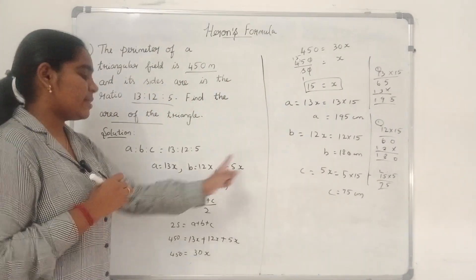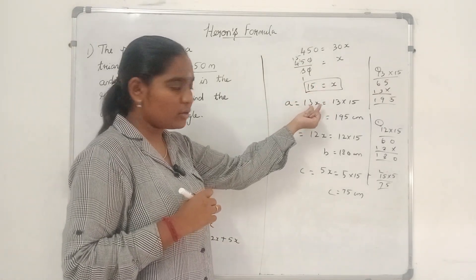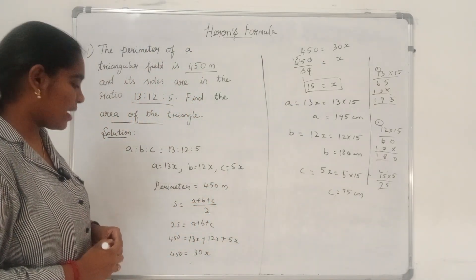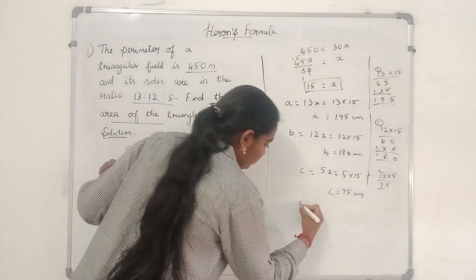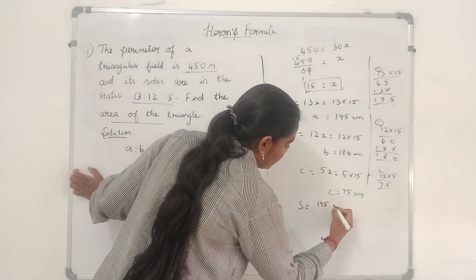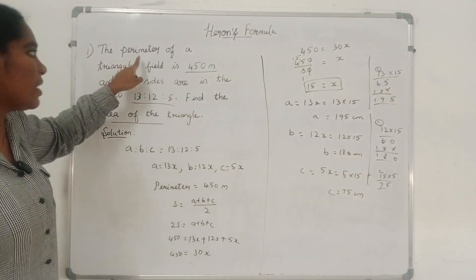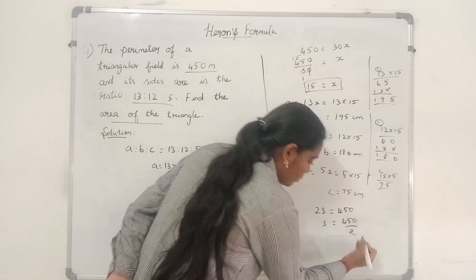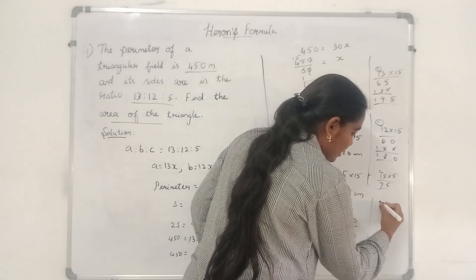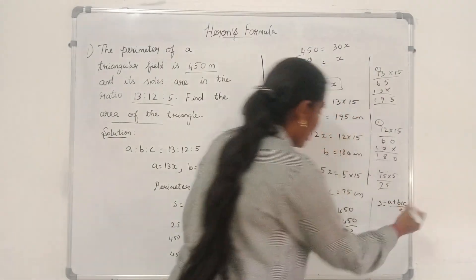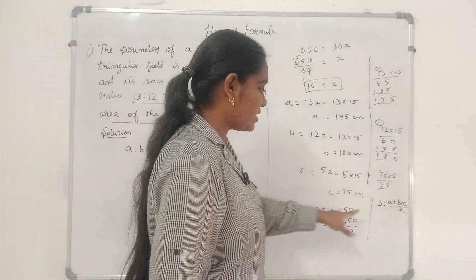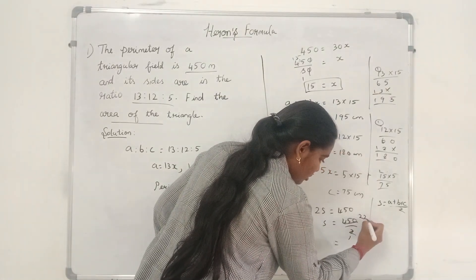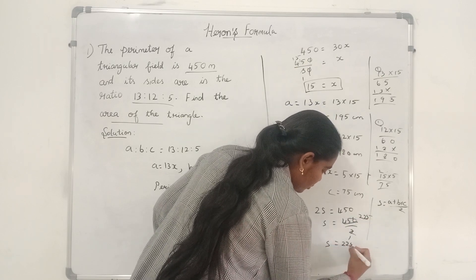We found the value of a, b, c by substituting the value of x in 13x, 12x and 5x. Next, we have to find the value of s. s equal to 225. You can do it in two ways: perimeter is 2s equal to 450, so s equal to 450 divided by 2, giving s equal to 225. Or you can write s equal to a plus b plus c divided by 2 and plug in the values.